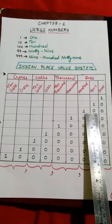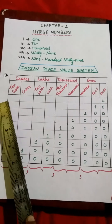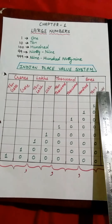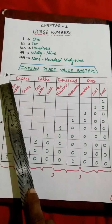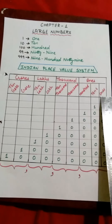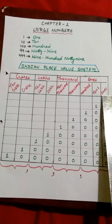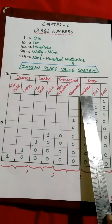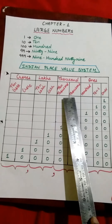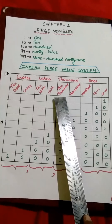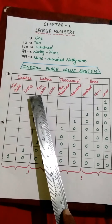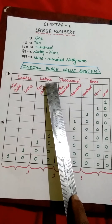You can see this chart — this is the Indian Place Value System. In this, we put the numbers from right to left. The first block is Ones. The Ones digit comes in the Ones block. The second is Tens. The third is Hundreds. All three are called the Ones block. Then comes the Thousands and Ten Thousands block. This block is called Thousands. Then comes the Lakh and Ten Lakh block. This is called the Lakhs block.